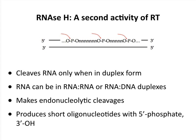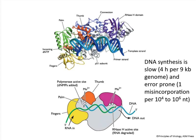Besides reverse transcriptase activity, these enzymes have a second activity built into the same protein: RNase H. This is a very important enzyme — it cleaves RNA when it's in a double-stranded form, whether RNA-RNA or RNA-DNA. It is an endonuclease — it cleaves internally, producing short pieces of RNA with 5'-phosphates and 3'-hydroxyl ends. This is important for removing the RNA template during reverse transcription. The RNase H domain is part of the same polypeptide as the reverse transcriptase.